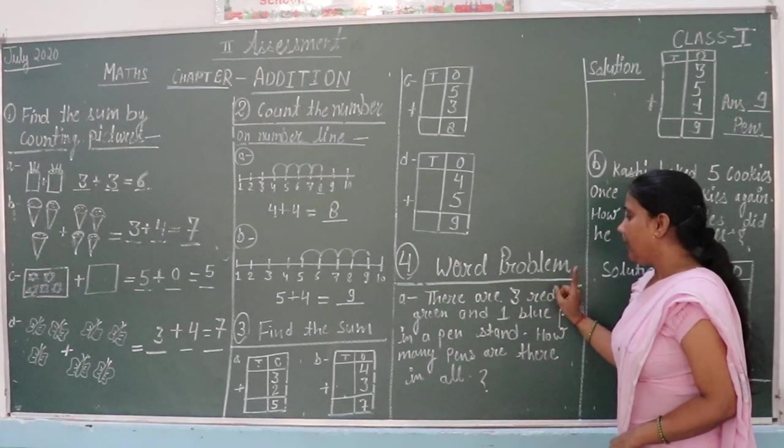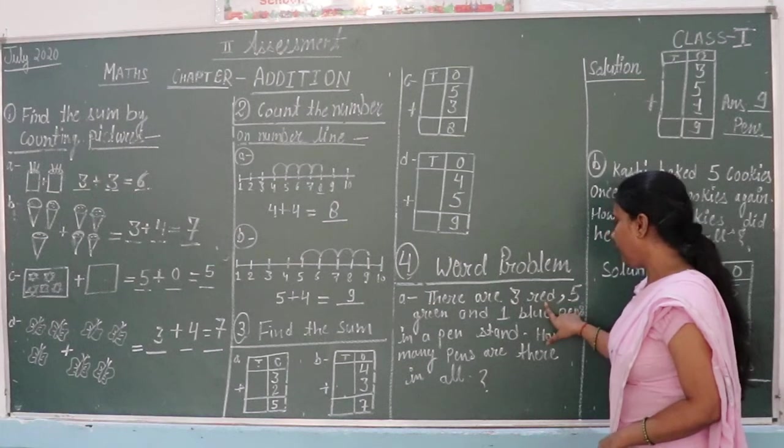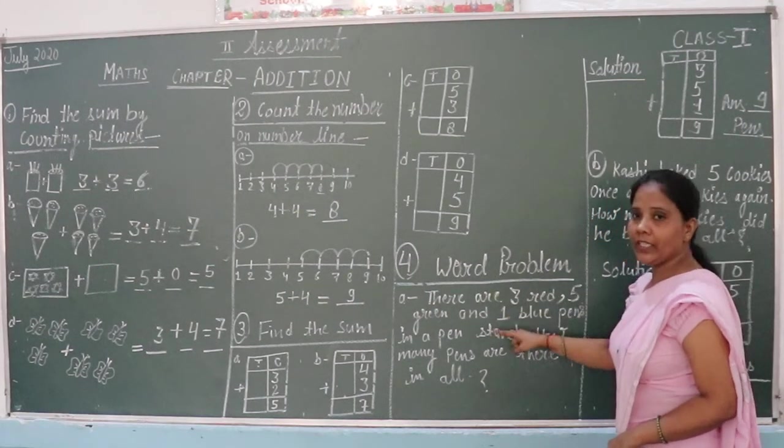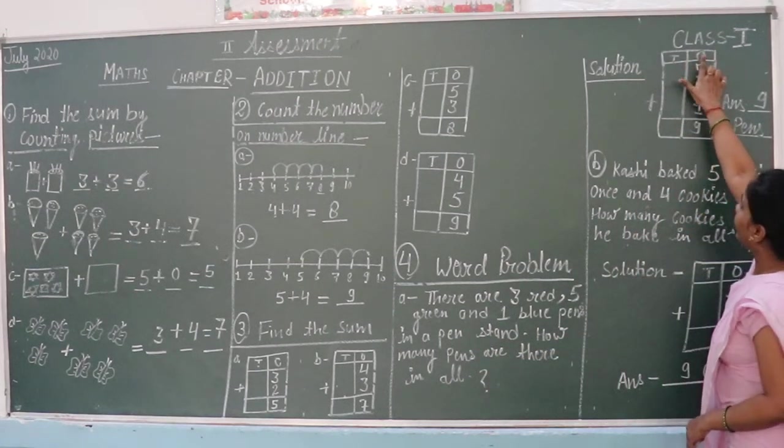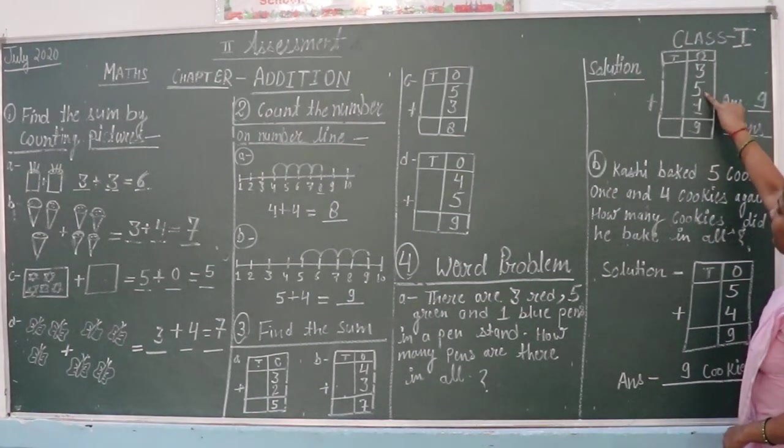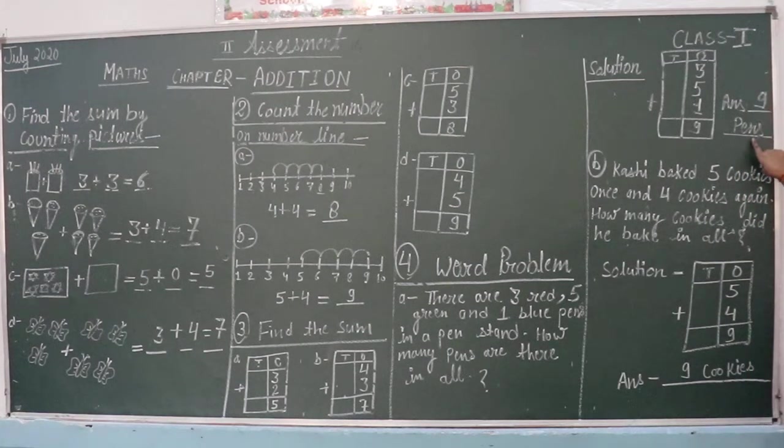Here are the pens that we have: 3 red pens and 5 green pens and 1 blue pen. So our total, how many pens are there? 10s and 1s. 3 plus 5 plus 1 is equal to 9. Answer are 9 pens.